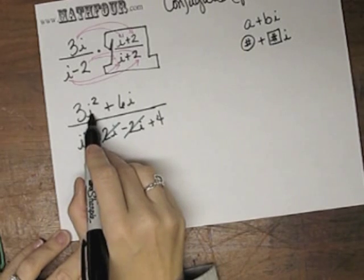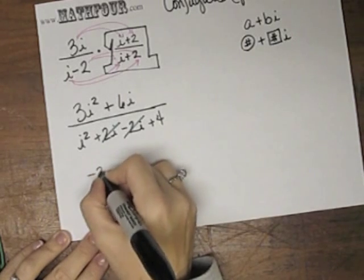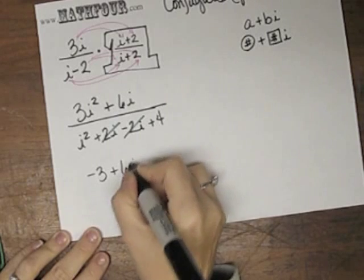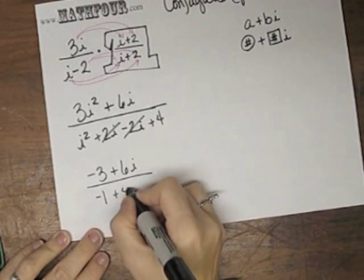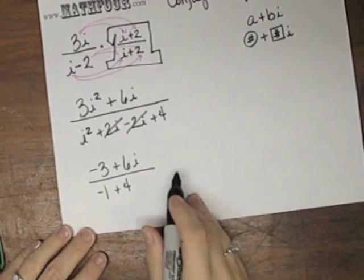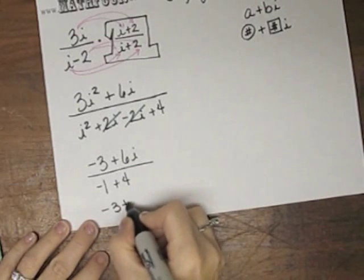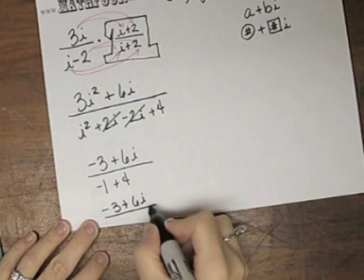i squared is negative 1. So this is negative 3 plus 6i. i squared is negative 1. So this is negative 1 plus 4. So I have negative 3 plus 6i over 3.